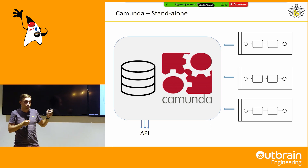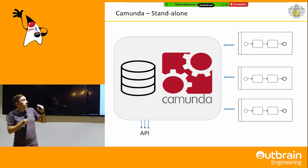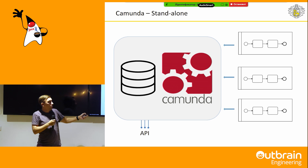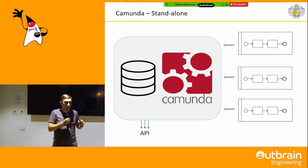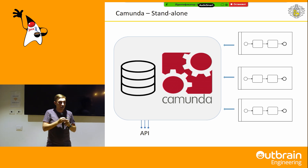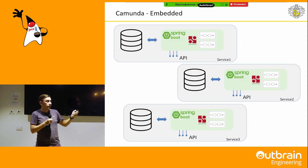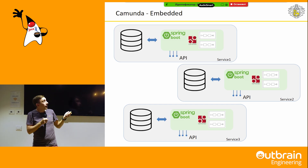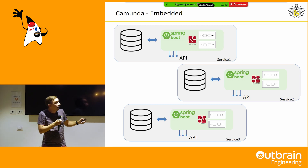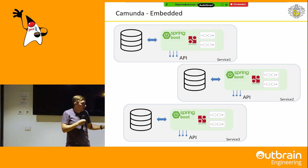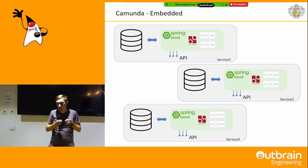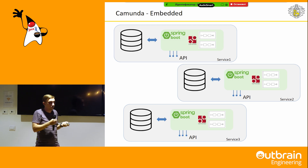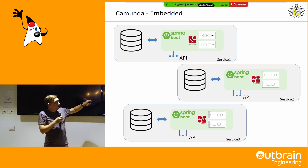How can we deploy Camunda? We can deploy it on a standalone server — just one server with its own database where we deploy our business processes. But we use another way: the embedded version. We have a Spring Boot application and Camunda is just a dependency in our module. Business processes are deployed as code with your application, with your container, and each service has its own database.